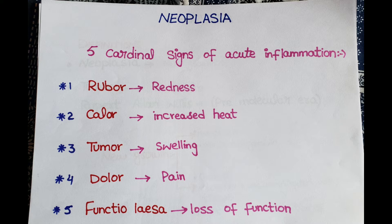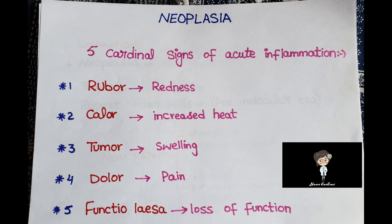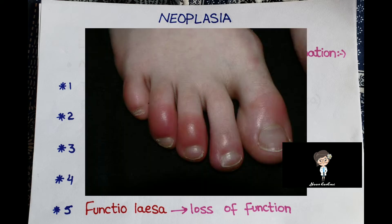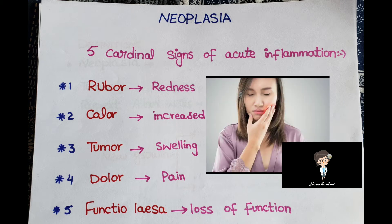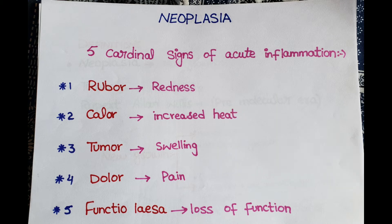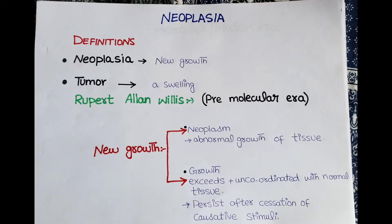Before we start with the definition of neoplasia, let's discuss the five basic cardinal signs of inflammation. Tumor literally means any swelling, first described by Celsius. The five signs of acute inflammation are rubor (redness), calor (increased heat), tumor (swelling), dolor (pain), and functio laesa, which means loss of function.